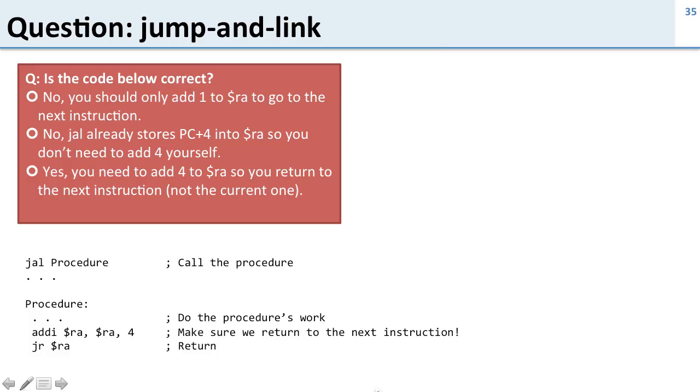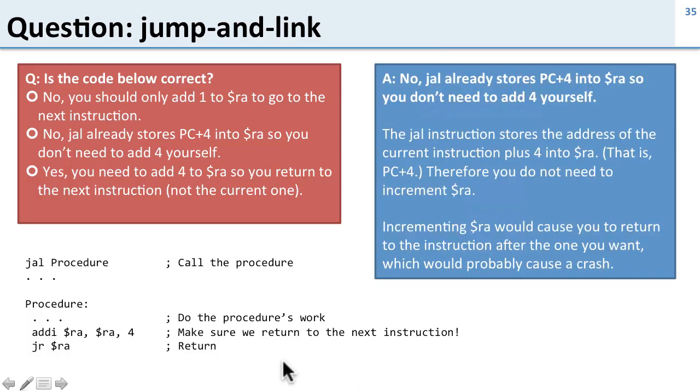So question: is the code below correct? The answer is no. When we call jump and link it's already storing the address of the next instruction. So in the procedure we don't need to go in here and add 4 to it. If we did that we'd end up going two instructions over when we got back which would probably cause the program to crash.